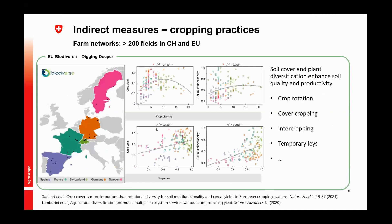In a broader European project looking at crop diversification effects on soil quality and productivity, analysis clearly showed that not only crop diversity but mostly crop cover — the time the soil is covered by plants — explains and improves crop yields and soil multifunctionality. So using crop rotation, cover cropping, and intercropping in the rotation — something we have known for a long time but still must be mentioned — are really important to keep soil health.